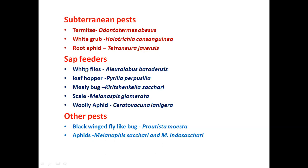Some sap-sucking insects are also present on the lower leaf surface. They suck sap and excrete large amounts of honeydew, which deposits on the upper surface of lower leaves, causing black sooty mold fungus to grow, completely reducing photosynthetic area. In severe cases, plants dry out. Important sap-sucking pests include: whitefly Aleurolobus barodensis; leaf hopper Pyrilla perpusilla; mealybug Saccharicoccus sacchari; scale Melanaspis glomerata; sugarcane woolly aphid Ceratovacuna lanigera; and black-winged fly-like bug Proutista moesta.